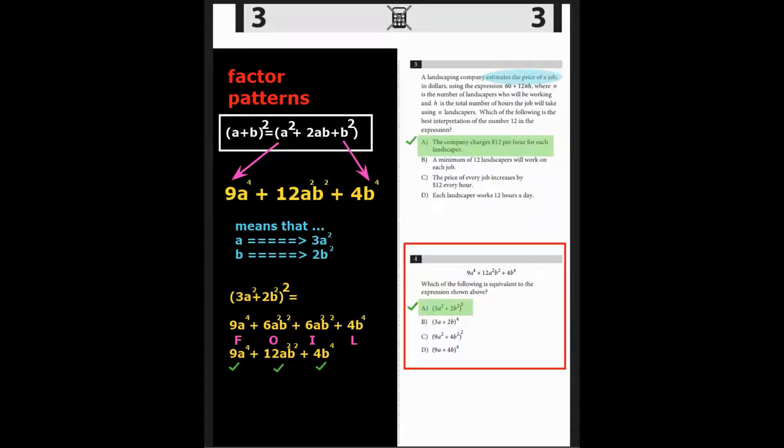Since we have 9a to the 4th, well that's supposed to be a perfect square. And the last term for B to the 4th is also a perfect square. Which means that A must have been scaled to 3a squared and B, the B term, was 2b squared. Meaning that if we take 3a squared plus 2b squared, and then square that, meaning multiply by itself,